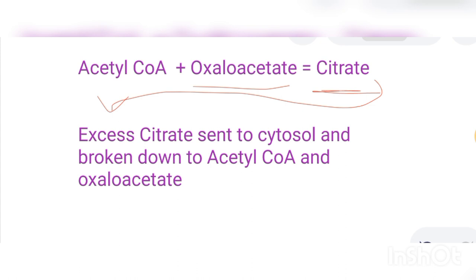Normally, the TCA cycle would produce FADH2, NADH, GTP, and carbon dioxide. However, this excess citrate will be shuttled to the cytosol — it leaves the mitochondria because the cells have plenty of citrate and a lot of ATP has already been generated.